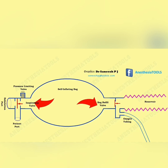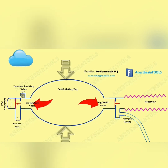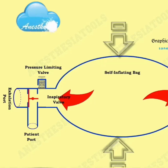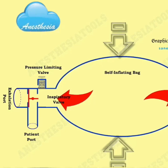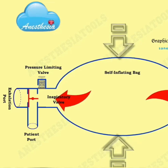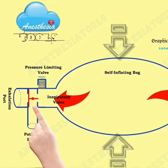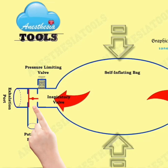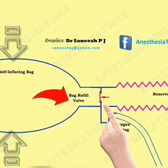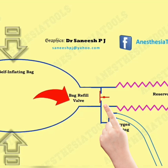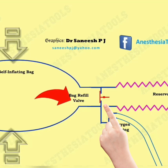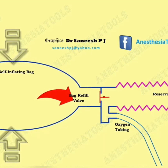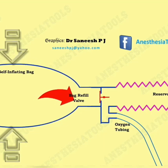Now let us see what happens when the self-inflating bag is squeezed. Because of the pressure the inspiratory valve gets pushed out and the bag refill valve gets pushed out to close. That is how unidirectional flow is ensured.